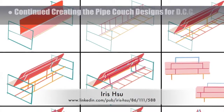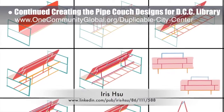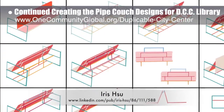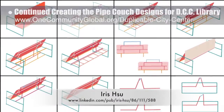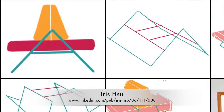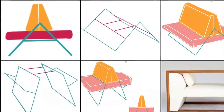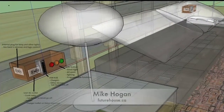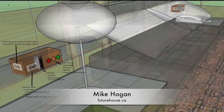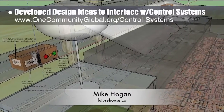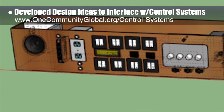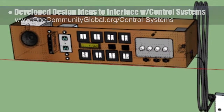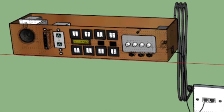Iowa Sue, industrial designer, continued with additional pipe couch designs for the duplicable city center library. The drawings shown here are her sixth-generation drawings, continuing development of the couch idea with an adjustable back and exploring different ways to support it. Her seventh-generation drawings return to a stationary back and explore how to significantly simplify it all. Behind the scenes, Mike Hogan, automation systems developer and business systems consultant, developed the first couple of design ideas for users to manually interface with control systems through hardware built into the bed design — a removable and replaceable box with a microcontroller that would allow for easy bedside control of all key system elements in the room.